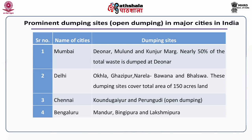This table shows prominent dumping sites in major Indian cities — from Mumbai, Delhi, Chennai, and Bangalore. In Mumbai, the dumping sites include Deonar, Mulund, and Kunjur Marg. The Deonar dump site frequently appears in the news due to constant fires generating large smoke that affects the environment and visibility. Nearly 50% of the total waste generated in Mumbai is dumped at the Deonar dump site.